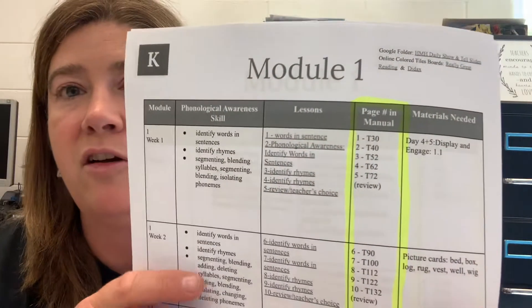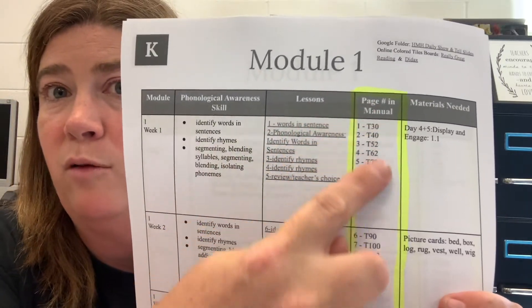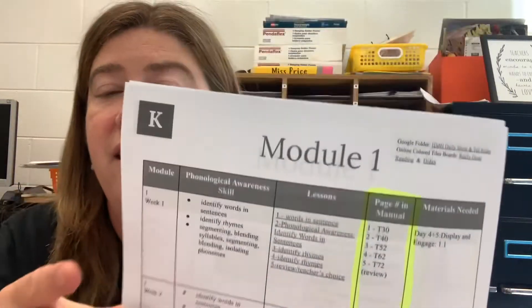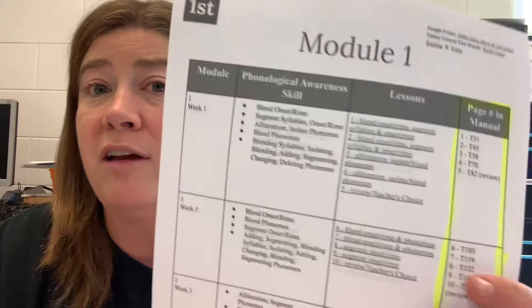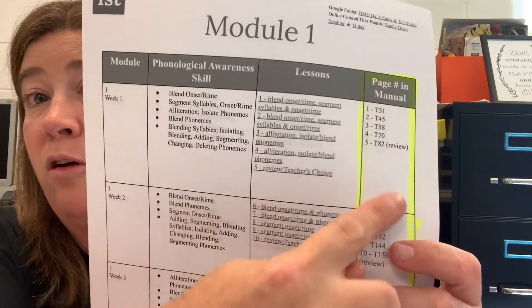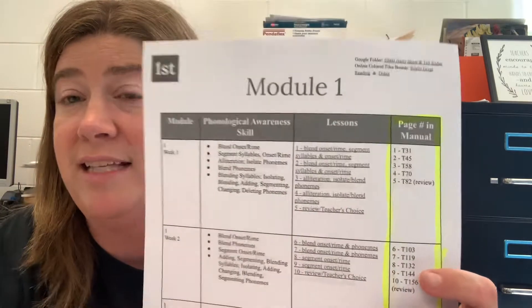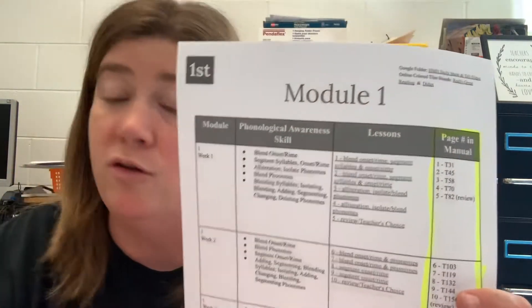So if you look at your pacing guide — for example, here's kindergarten, here are the pages in your teacher's manual, I highlighted them right there. If you are in first grade, your pages in your teacher's manual are right here at the end of the pacing guide. You can also access these from the digital teacher's manual.